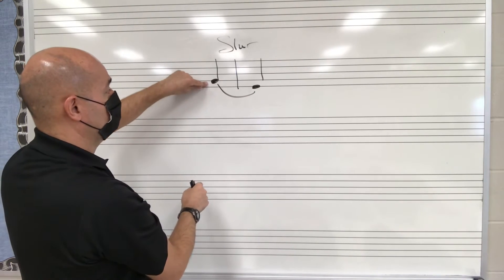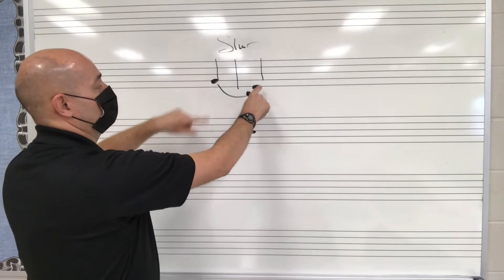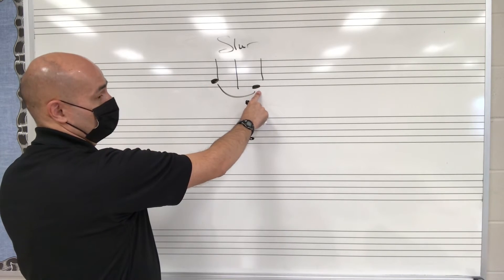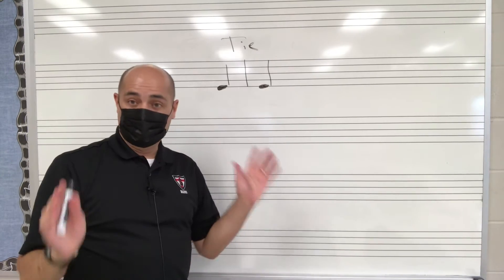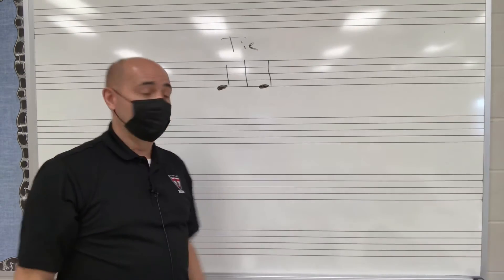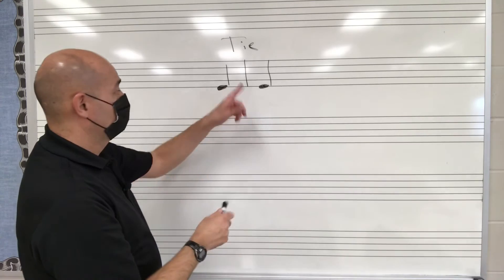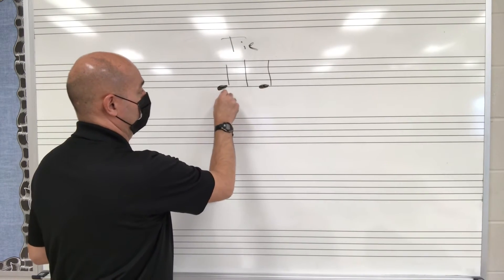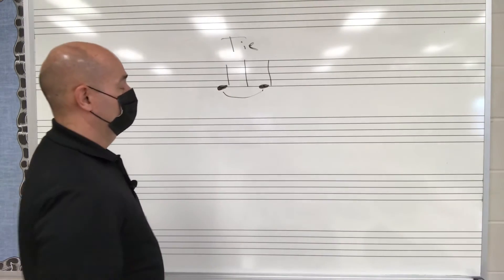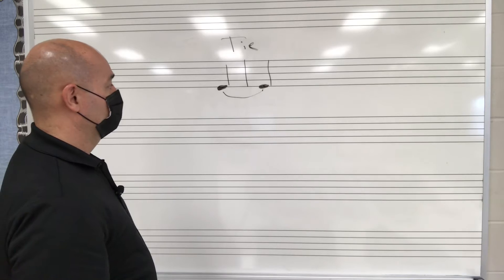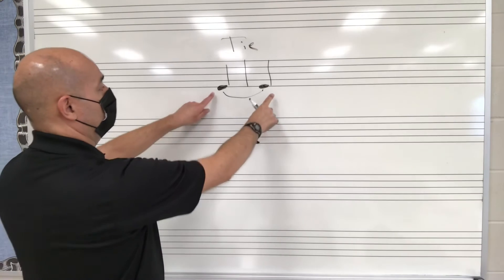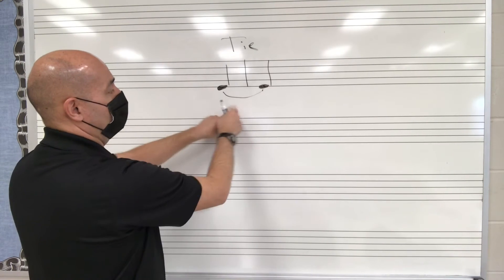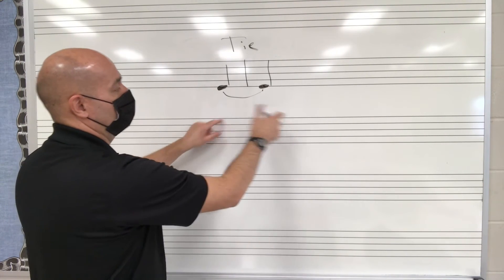When you slur, you tongue the first note but let the air and fingers do the work for the next. A tie connects two notes of the same pitch — we have a note here and a note here, we draw that line between them, and now these two quarter notes combine to make a half note.